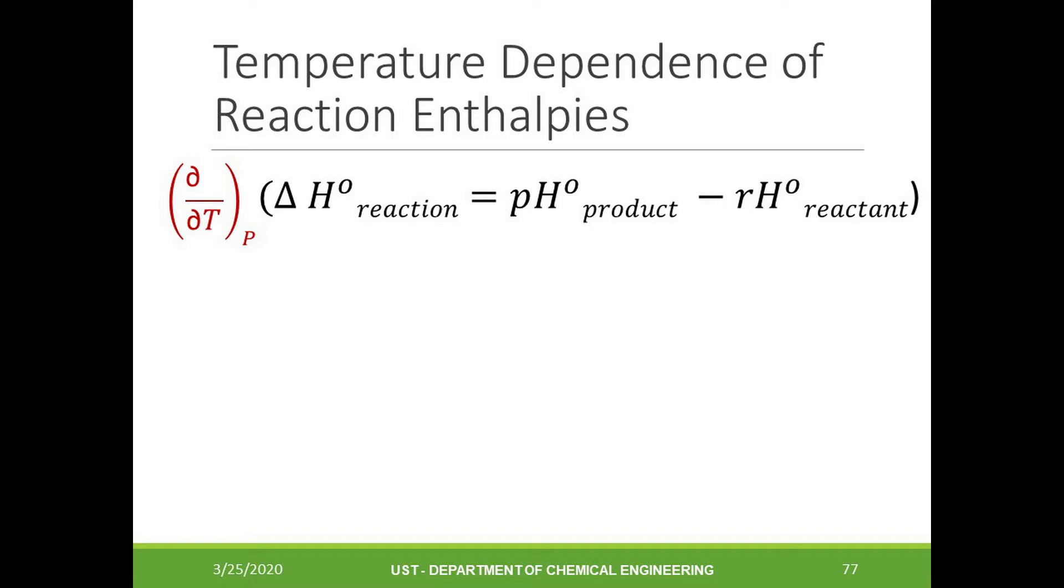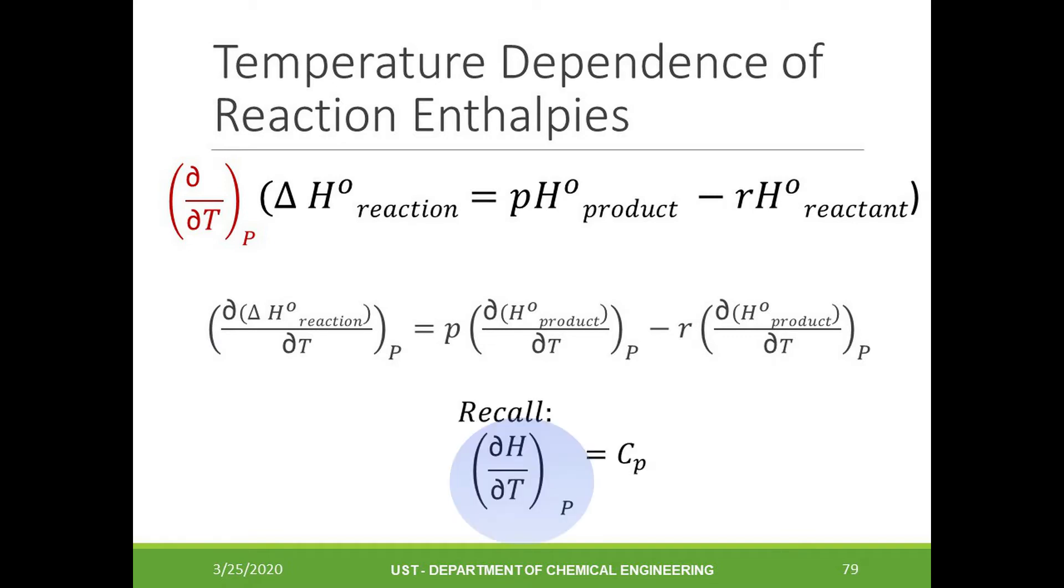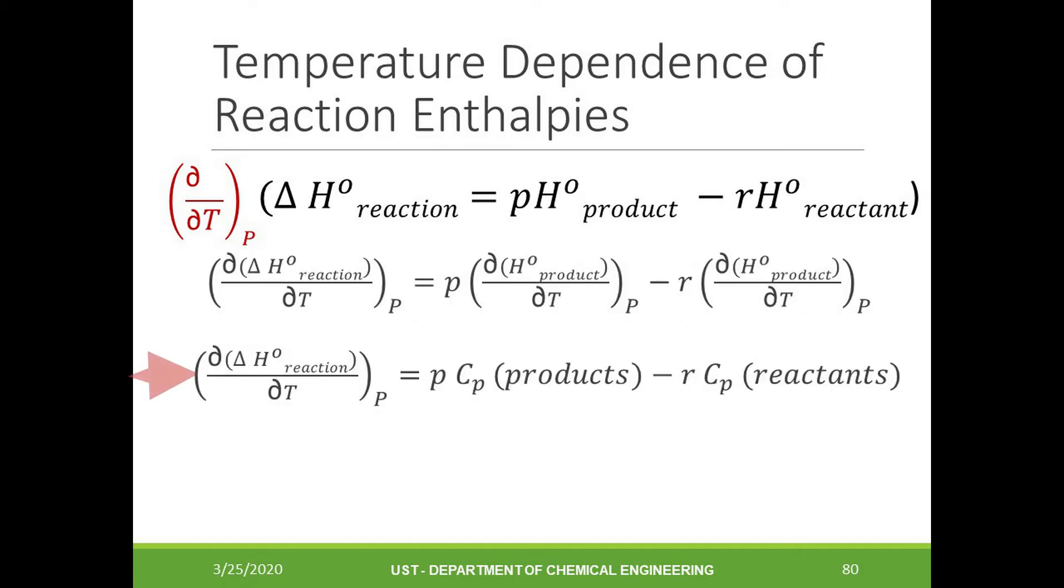In order to do this, we have to take the partial derivative of the entire equation with respect to temperature while keeping the pressure constant. Doing so will give the following equation. Recall that this term is equal to the heat capacity at constant pressure. Substituting this term for the enthalpy of products and enthalpy of reactants will give us the following equation.